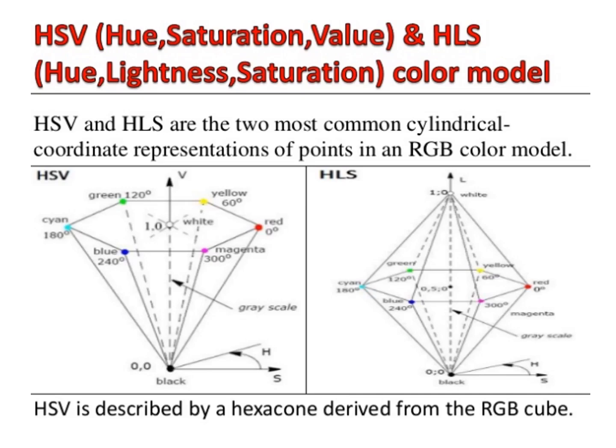At S=0 and V=1 we have white. Intermediate values of V for S=0 along the center line are gray shades. When S equals 0, the value of H is irrelevant. When S is not 0, H is relevant. At the apex where V=0, the values of H and S are irrelevant. The cross-sectional plane represents the color concepts associated with shades and tones: black is added to the pure hue to produce shades, white to produce tints, and both white and black to produce tones.